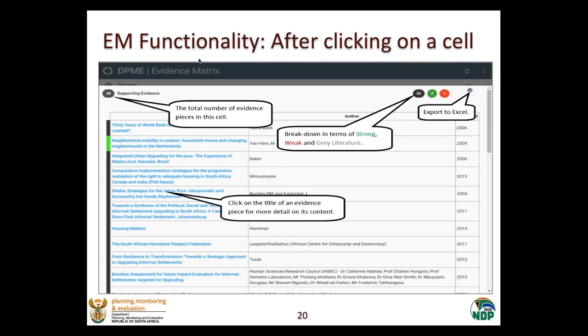When you move to the right, next to the export to Excel icon, you'll see a little breakdown that is color coded. Gray means gray literature — this bubble contains 35 pieces of evidence from gray literature — and then three formal literature searches, of which two have been deemed strong and one is weak. Green means strong, red means weak, and gray means gray literature.